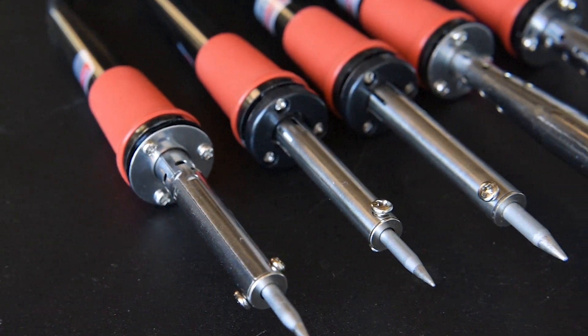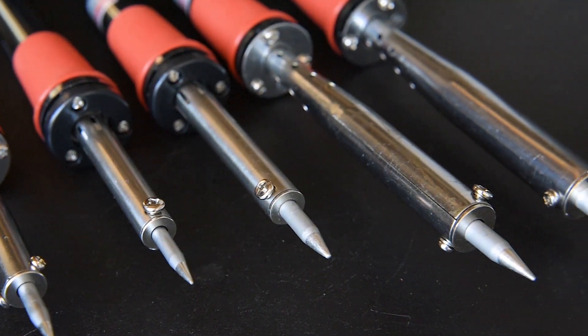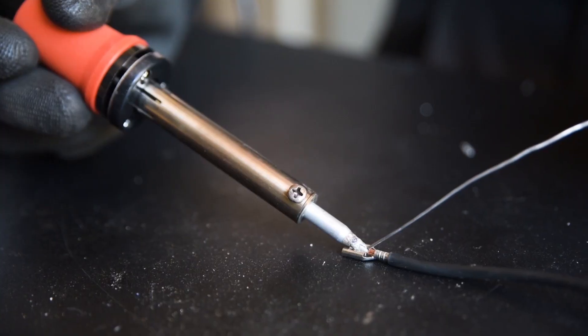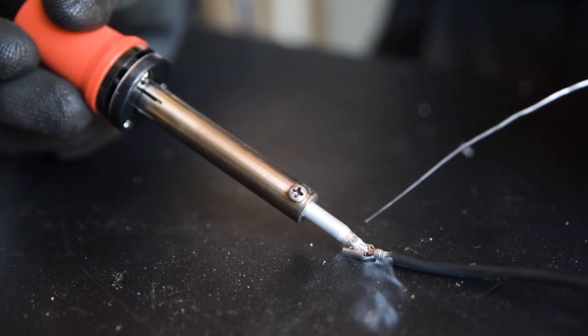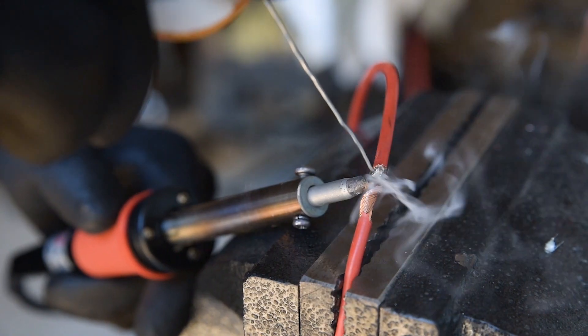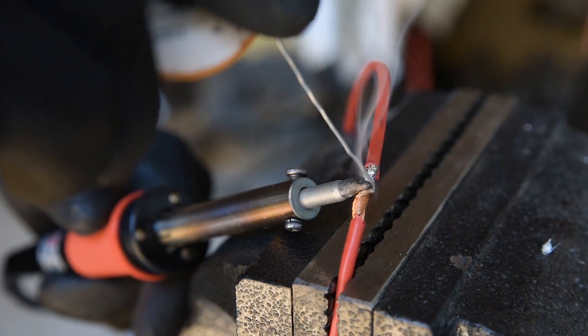These Toledo soldering irons are available at Super Cheap Auto in five different variants. So which should you choose? Well, it's all about picking the right amount of power for the job. Too little and the solder won't bond with the workpiece. Too much and the heat can ruin wiring and components.